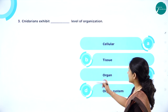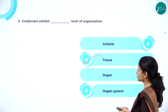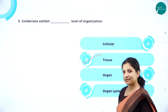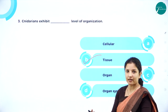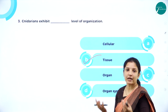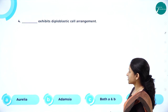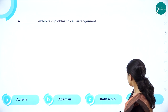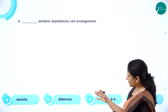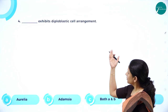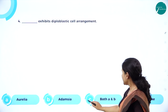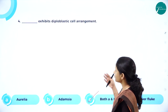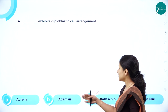Third MCQ: nidarians exhibit dash level of organization. The answer is tissue level of organization, because their tentacles are a group of cells coming together to form a tissue that performs a specific function — capturing prey. Fourth MCQ: dash exhibits diploblastic cell arrangement. Is it aurelia, adamsia, both A and B, or liver fluke? Aurelia and adamsia both come under Coelenterata, so both A and B is the right answer. Liver fluke comes under flatworms (Platyhelminthes) and has triploblastic cell arrangement.